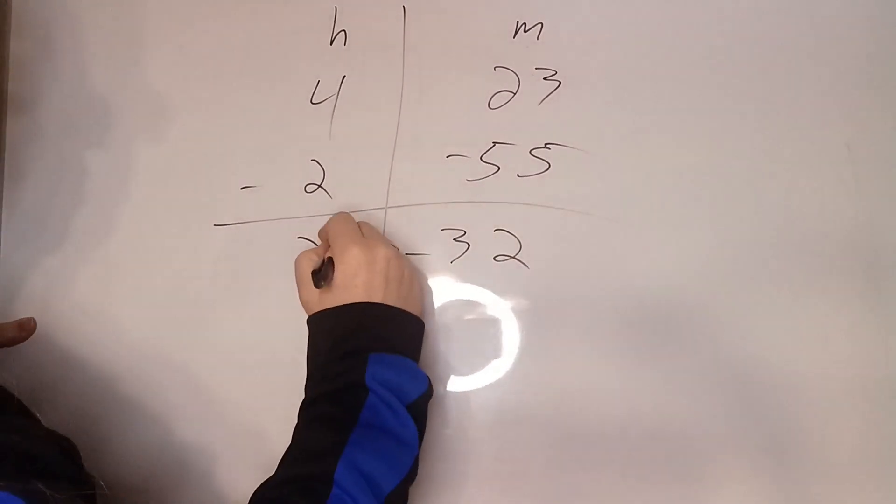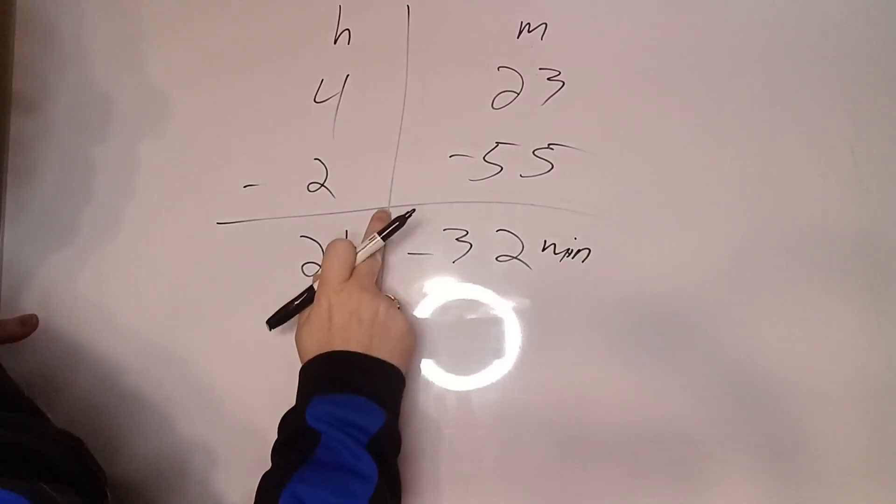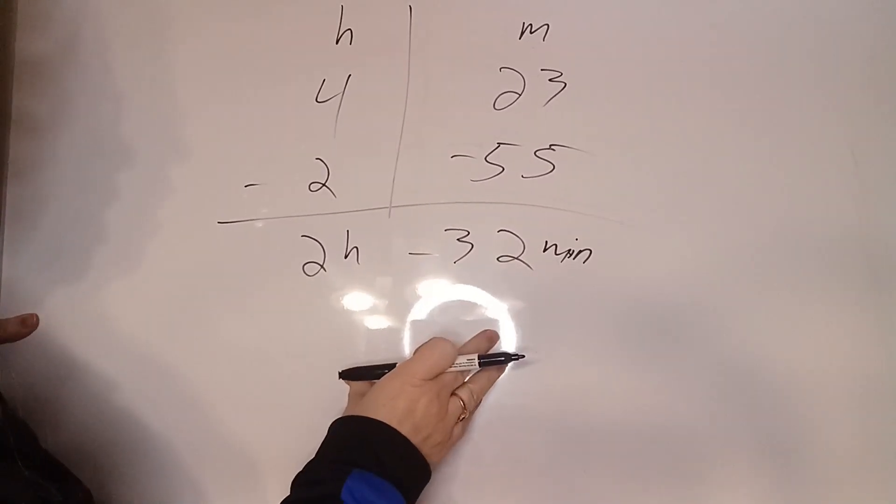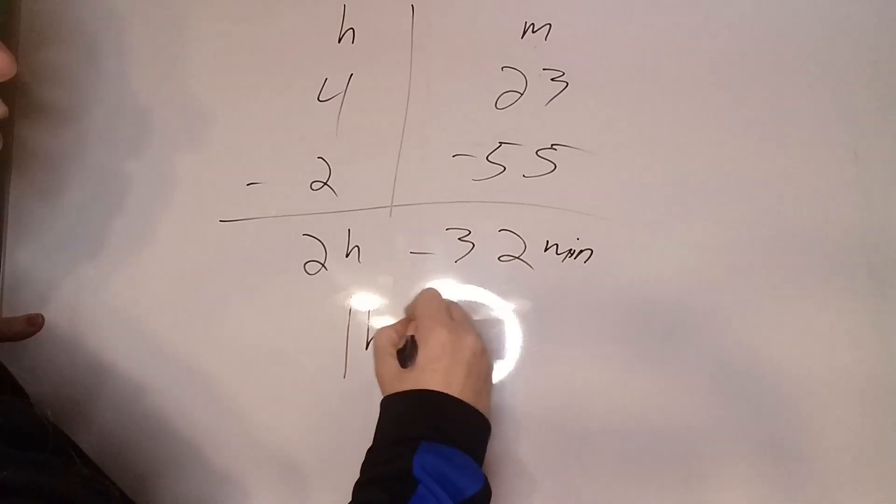Minus 55 and 23 is going to be minus 32. So now we do this part. Two hours minus 32 minutes. Well, 30 minutes would be a half an hour, right? So we have one hour, 28 minutes.